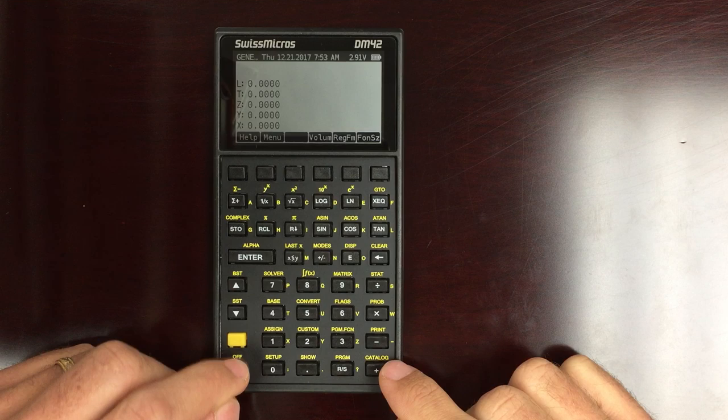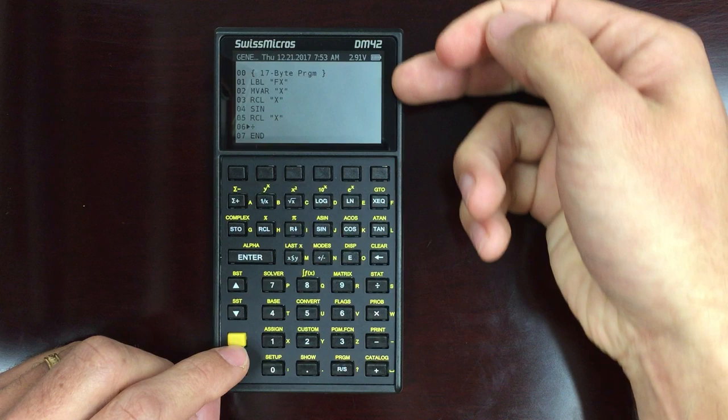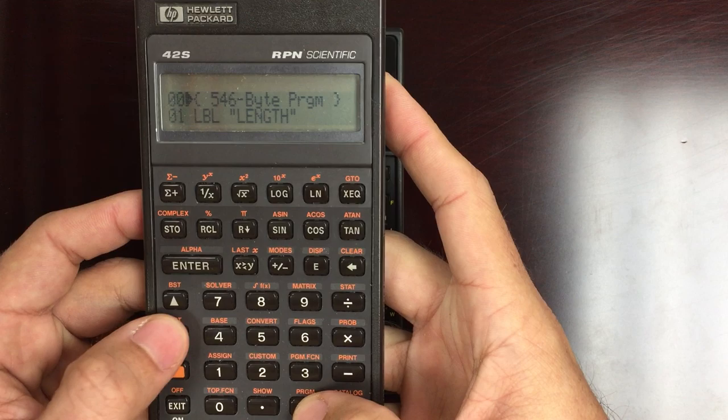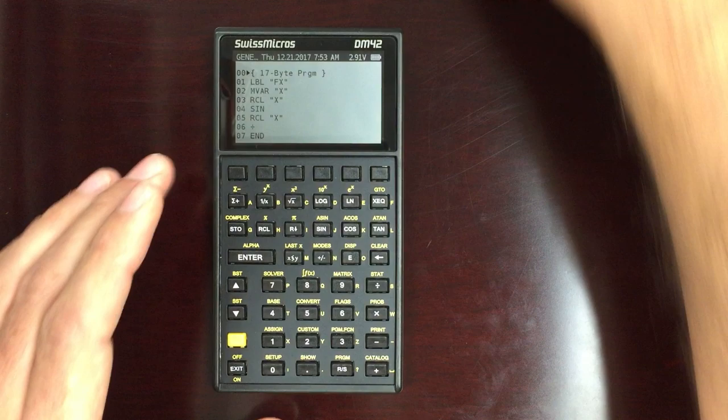And one other thing that I wanted to show that is very nice about this calculator is your programming. So if I go into program mode, now I've got what? Eight lines of program that I can view. I really like that. On the original 42S, when you go into program mode, you can only see two lines at a time. Being able to see four, I mean eight, that's nice.